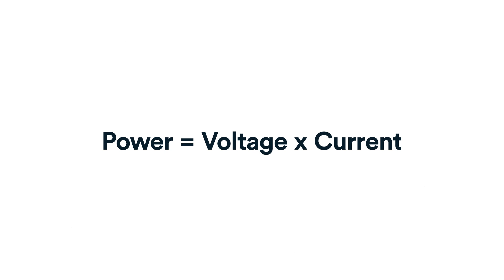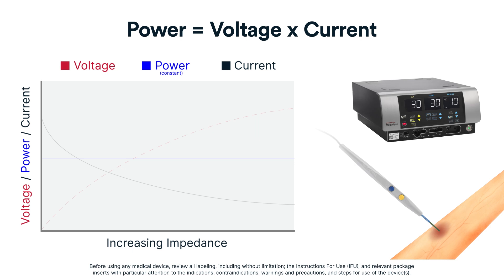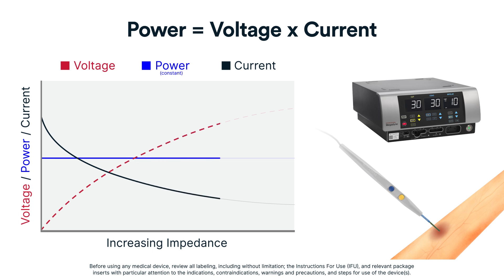The second important relationship is power equals voltage times current, which explains how voltage changes when encountering resistance. In surgery, the generator delivers constant power and is set to a given power level. When the monopolar instrument encounters resistance in the tissue, the generator responds by increasing the voltage and decreasing the current.